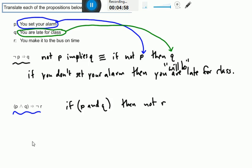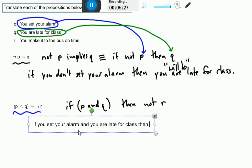So how would we think about putting that into a sort of nice, compact sentence? If you don't set your alarm and you are late for class, then you will not make it to the bus on time. I'm going to type this one out because I think it'll be quicker than actually writing it. If you set your alarm and you are late for class, then you, I'd say probably using the right tense, didn't make it to the bus on time.